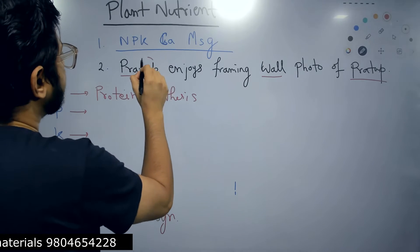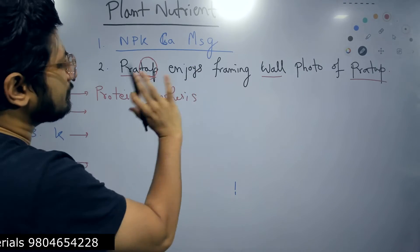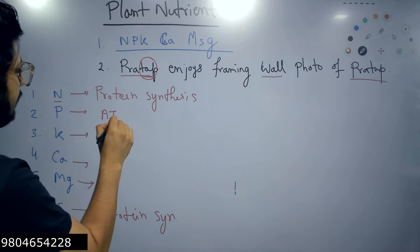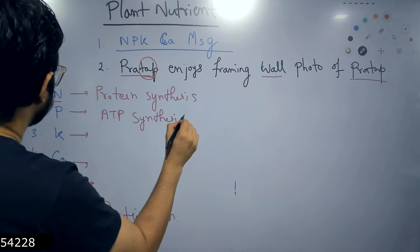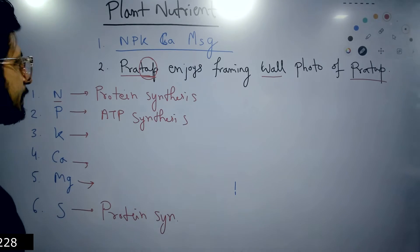So Pratap, you can see the T-A-T-P, T-A-P. Enjoy this TAP or ATP. So P for ATP synthesis. So phosphorus is needed for the ATP synthesis in the plant.